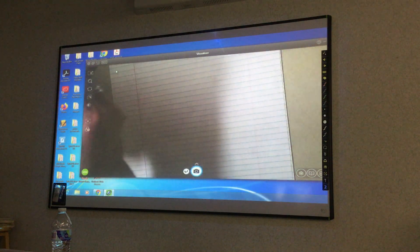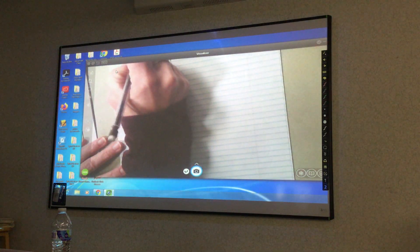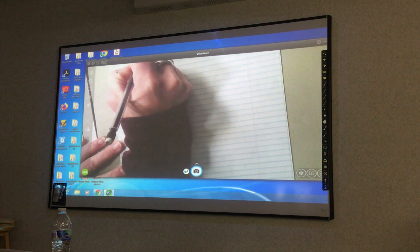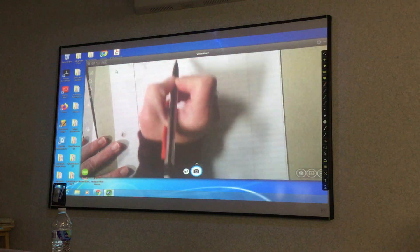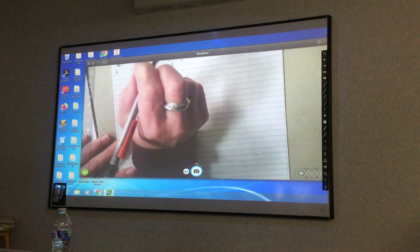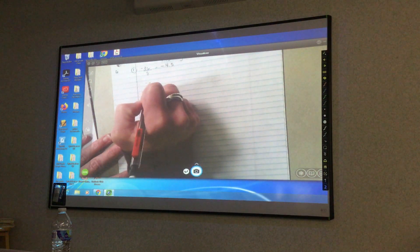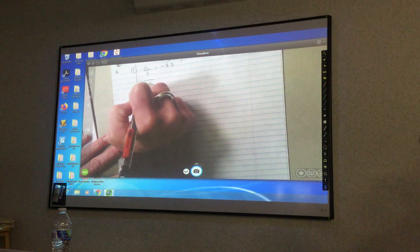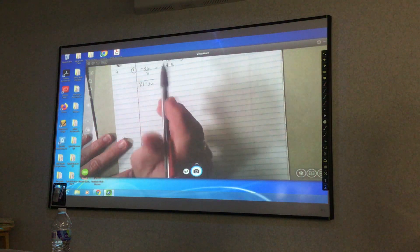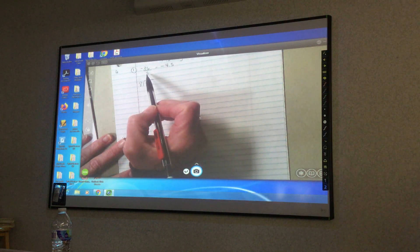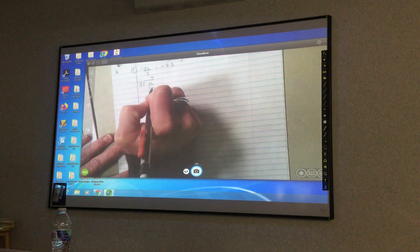So I have negative 36 eighths. I have negative 36 divided by 8. It is not 8 divided by 36. It's always numerator divided by denominator. 8 goes into 36 four times, which is 32.